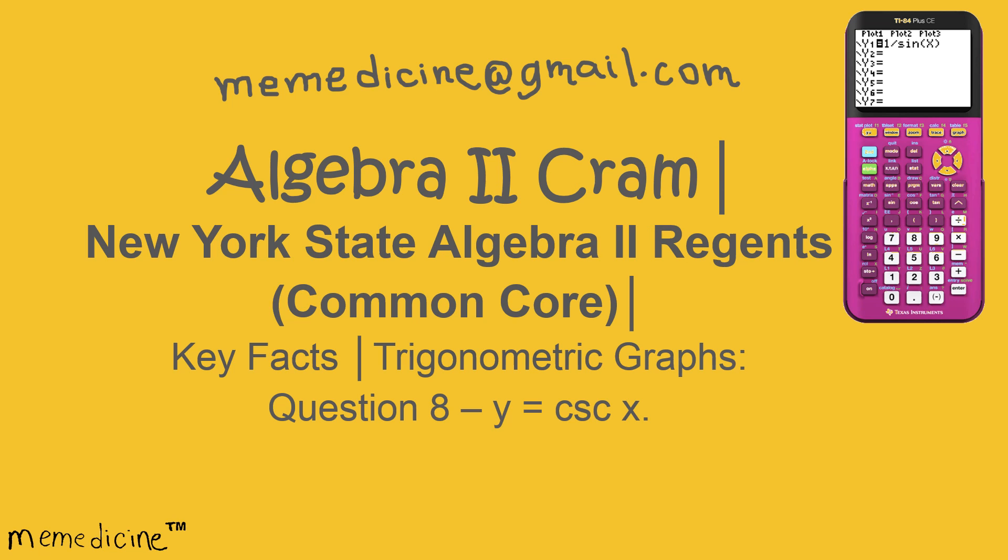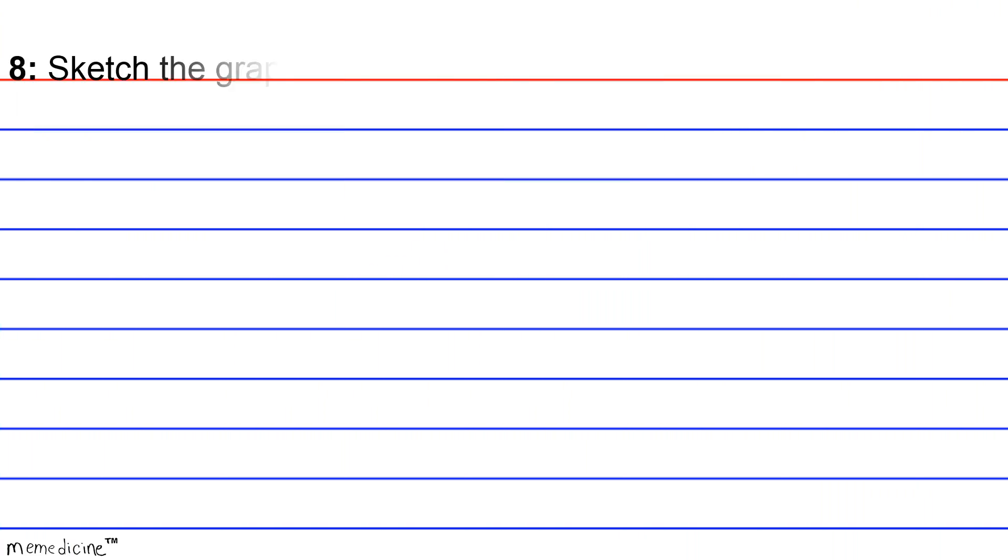So let's delve into the problem. Sketch the graph of Y is equivalent to the cosecant of X over the interval negative 2π is less than or equivalent to X is less than or equivalent to 2π. I'll give you a moment to think and formulate your solution to arrive at the correct sketching. Definitely press pause. So hopefully by now you've arrived at a solution and if not, that's completely fine. Let's start this together.